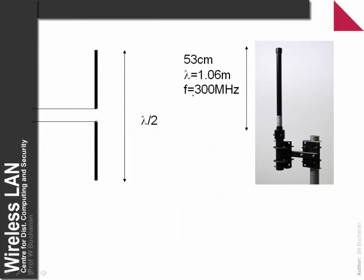As an example at 300 MHz, the calculation gives a wavelength of 1.06 m. The smaller the frequency, the larger the wavelength, so we have relatively large antennas in this case — the actual antenna height would be 53 cm.